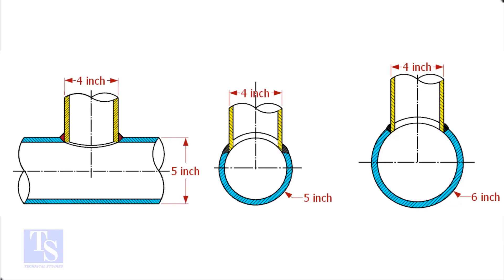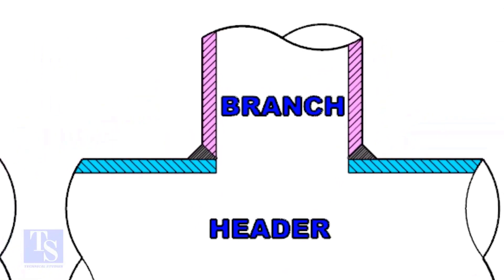Watch the section side view carefully. Check the stub-on view. The branch pipe sits on the header. The cut-back cutting of the branch pipe is done and the bevel is also prepared.